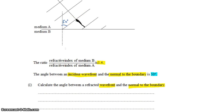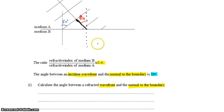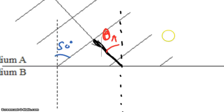Let's extend this ray all the way down to the boundary and add a normal there as well. For Snell's Law, we need this specific angle — the angle between the normal to the boundary and the ray. That's our incident angle, which we'll call theta A for medium A. We're looking to find the angle of refraction, theta B.